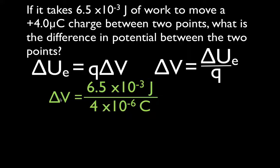So, if we do positive 6.5 times 10 to the minus 3 joules, if we move a certain amount of charge, 4.04 times 10 to the minus 6 coulombs, through a potential, then that potential must be 1625 volts.